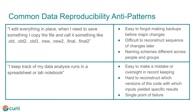Some more quotes. "I edit everything in place. When I need to save something, I copy the file and call it something like .old or .old2 or .old3 or .new or .new2 or .final or .final2." Try coming back to this a week later. There's always a little voice in the back of my head doubting that the file named .final2 is really the one I sent out. This is even worse if we are talking about very large data files like sequence reads, and you're making destructive changes like filtering. Keeping lots of copies around can be a waste of disk space, but if it's not clear which file is the original, nobody will ever be able to figure out what you did.